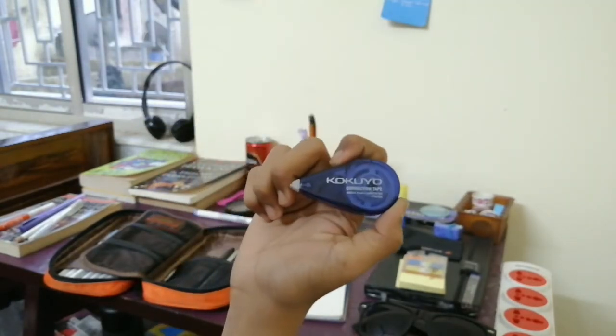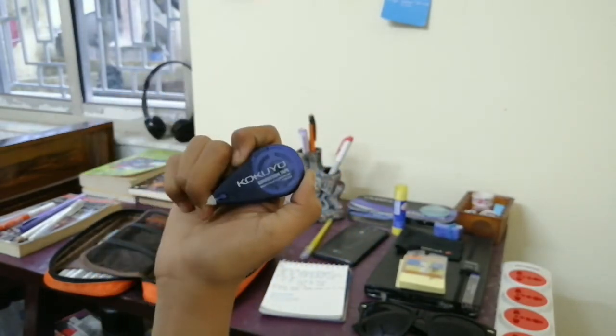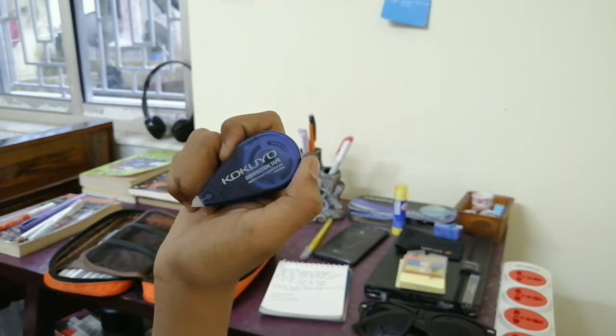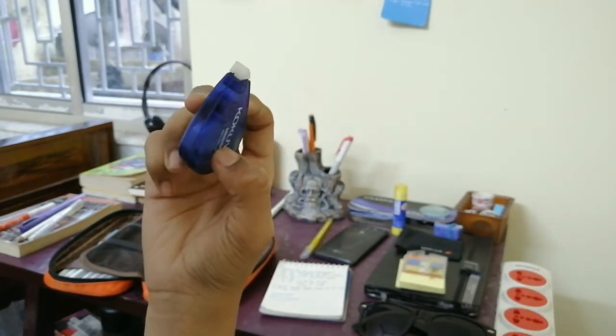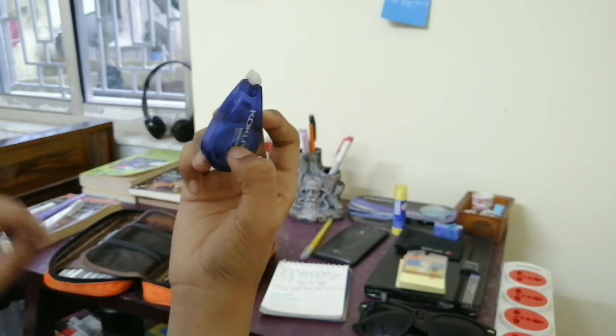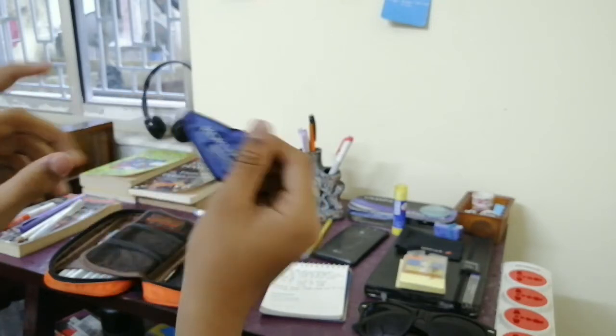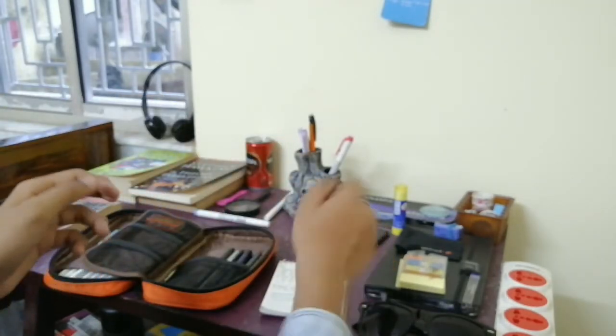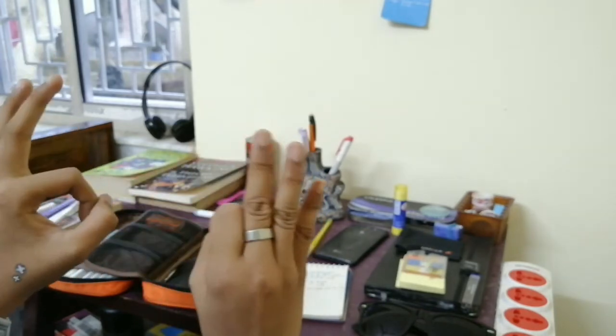This is a Koyoku correction tape used by most of the study vloggers on YouTube. It's very useful. One of the reasons is you don't need to mess up with white correction fluid. This tape, you just wipe it and all good, everything perfect.